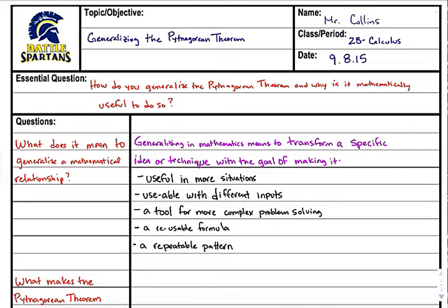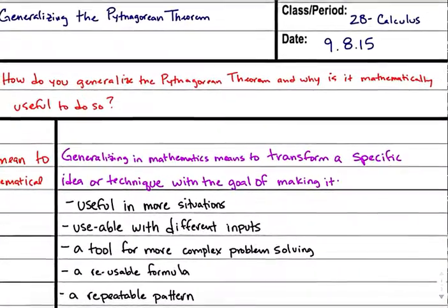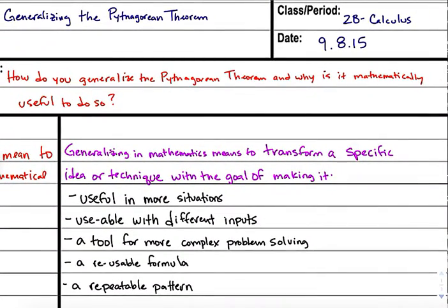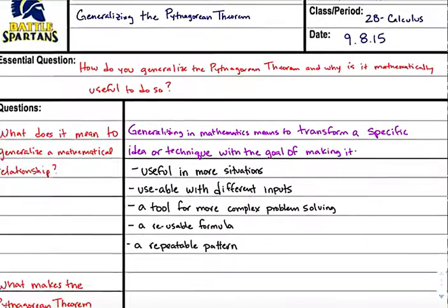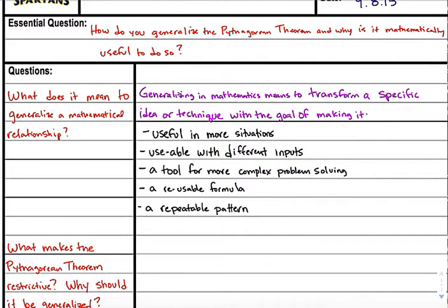So let's talk about generalizing Pythagorean Theorem. The essential question I'm working on, we should be working on right now is how do you generalize Pythagorean Theorem, but much more importantly, why is it useful to do so? So the very first question I think we should ask ourselves is what does it actually mean to generalize?